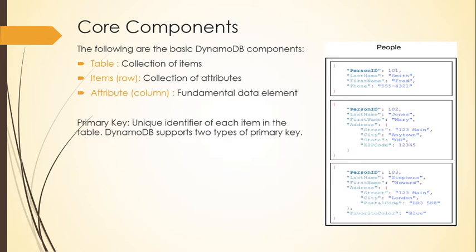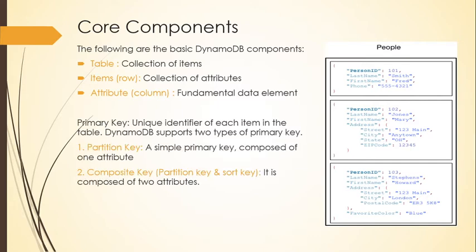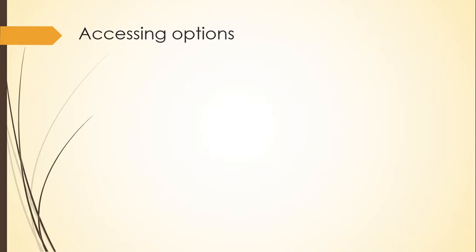Moving on to the primary key: in the image you can see that person ID is the primary key, which is the unique identifier of each item in the table. DynamoDB supports two types of primary key: partition key and composite key. A partition key is a simple primary key composed of a single attribute. A composite key is composed of two attributes — the partition key plus the sort key. You can use either as your primary key based on your requirement.